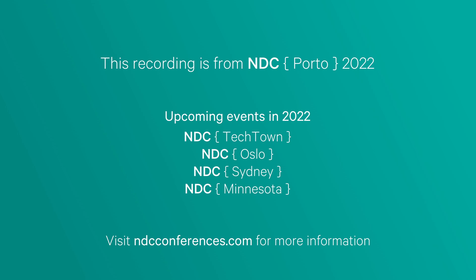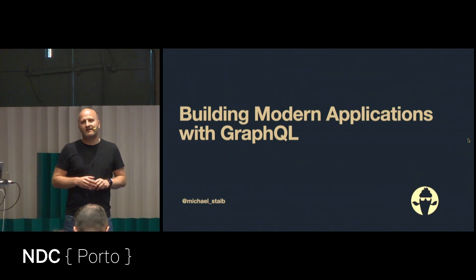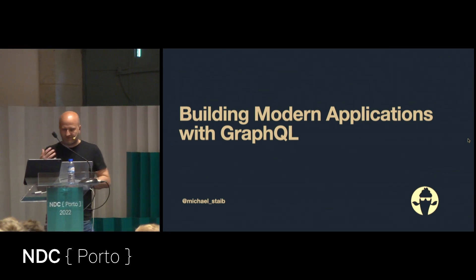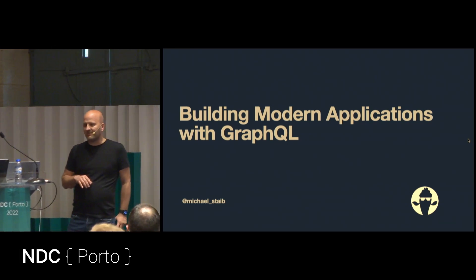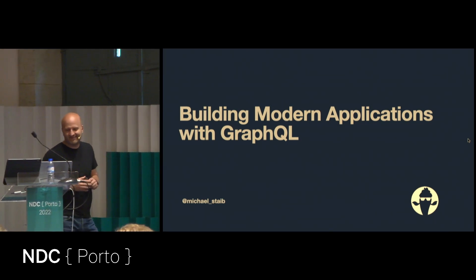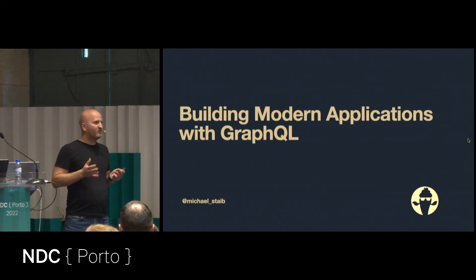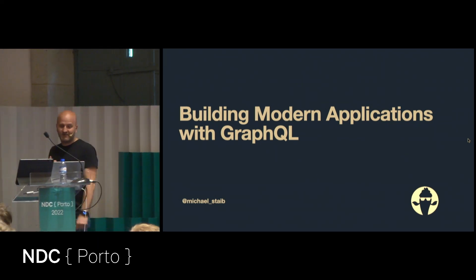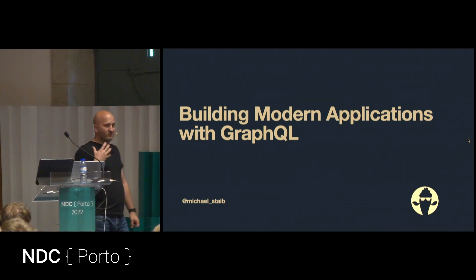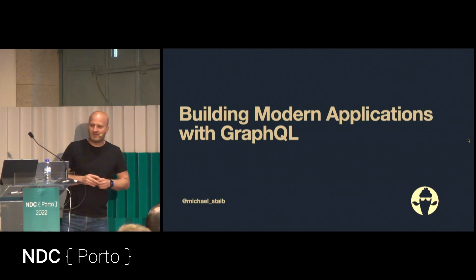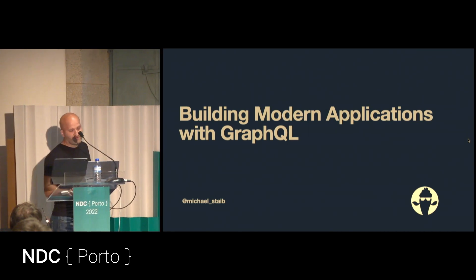Hi everyone. My name is Michael Stipe. I'm one of the 11 members of the GraphQL Technical Steering Committee of the GraphQL Foundation, and I'm also the author of the Hot Chocolate GraphQL library in .NET. Today we are going to take a trip and explore how we can build modern applications with GraphQL. For me, modern applications means that applications are reactive and responsive, have strong contracts with your backend, and you have things like compile time safety.